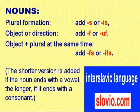Nouns — Plural formation: add S or IS. For object or direction, add F or UF. For object plus plural at the same time, add FS or IFS. The shorter version is added if the noun ends with a vowel; the longer if it ends with a consonant.